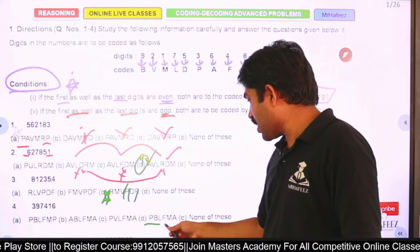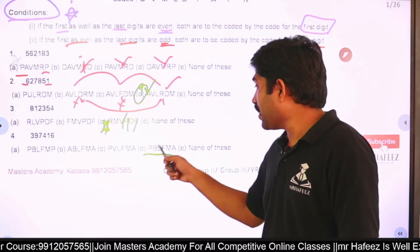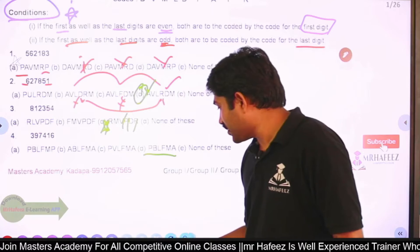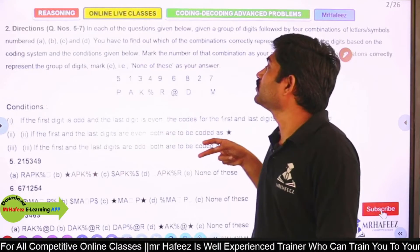Madhavi is telling it is D. P, B, L, F, M, A. Sushmita is telling it is P, B, L, F, M, A. Excellent. Answer is right. So moving to the next model.